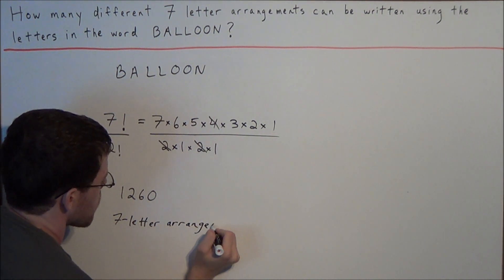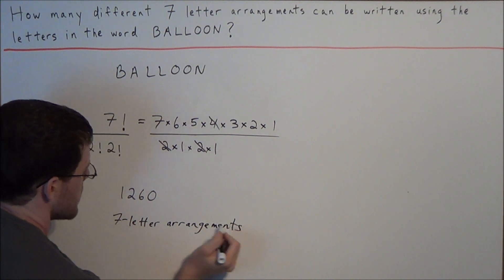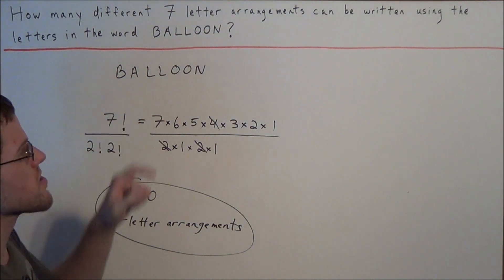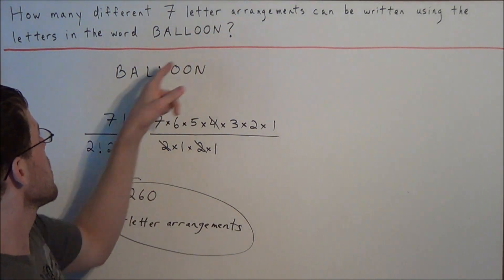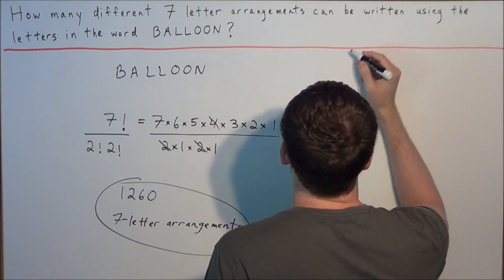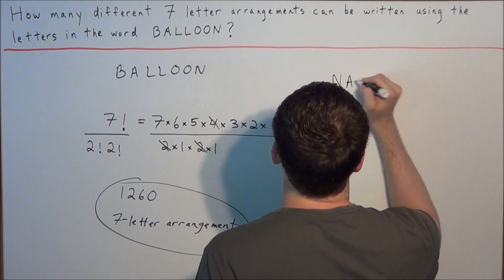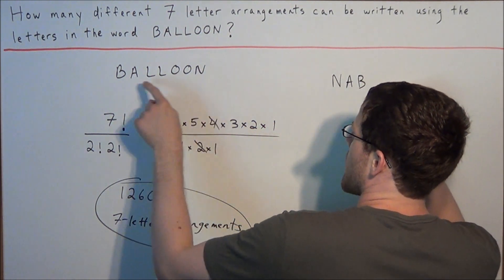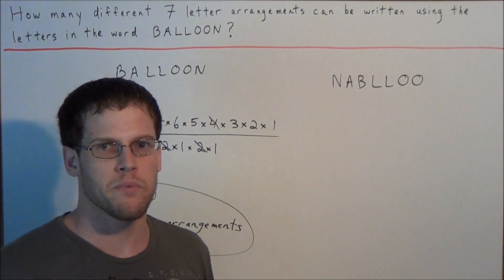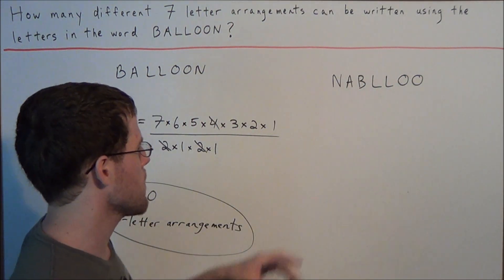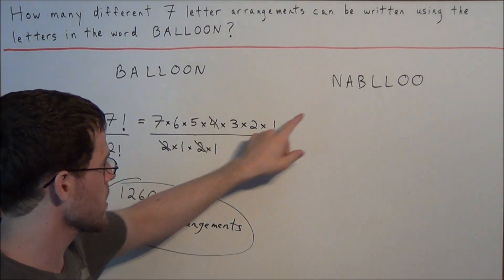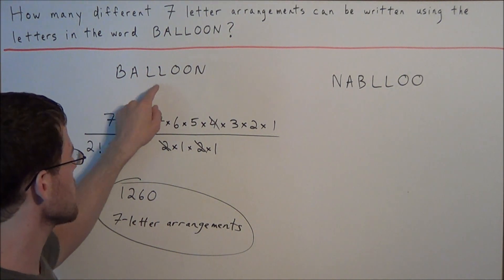But now let's explore a little bit more why we divided by two factorial two factorial. Let's look at one random seven letter arrangement that uses the letters in the word balloon. Let's say we went with N-A-B double L double O. I guess if we had to pronounce that it would be N-Blue or something wacky like that, but this is one arrangement of the word balloon. We take the letters and we take N-A-B-L-L-O-O.